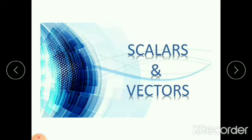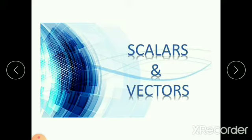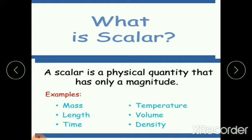Next we will see scalar and vector quantities. The motion of an object can be described by terms such as distance, displacement, speed, velocity, and acceleration. These physical quantities can be divided into two categories — scalar or vector. A scalar quantity is a physical quantity that has only magnitude, fully described by magnitude alone. For example: mass, length, time, temperature, volume, and density are scalar quantities.